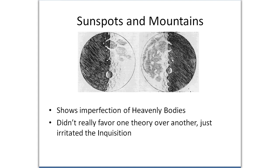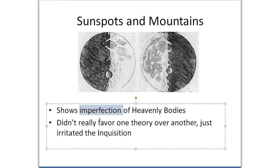He also saw mountains and valleys on the moon — sketches he made make it quite clear to any neutral observer that there are craters, mountains, and ridges. He also saw sunspots on the sun, which he observed by looking through his telescope directly at the sun — not perhaps the brightest thing he ever did. He did eventually go blind, and there may be a correlation between the two. These observations didn't really prove much other than that the heavenly bodies, which had been thought to be perfect, were not. This really served mainly to irritate the Inquisition, which was active at the time.